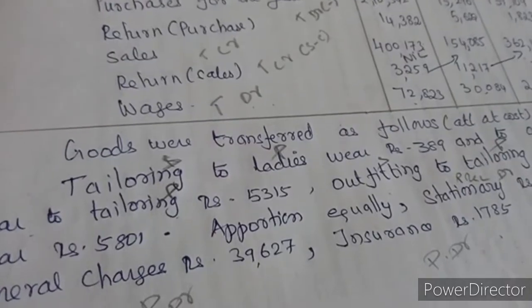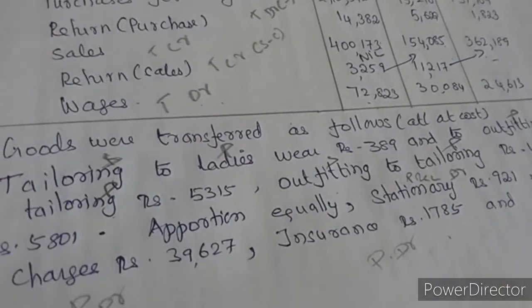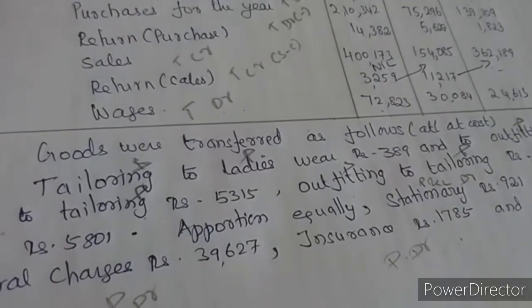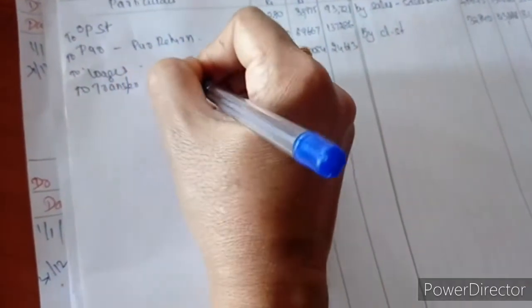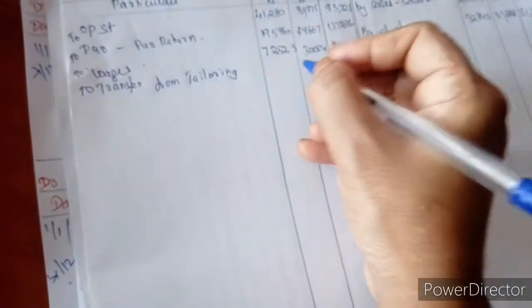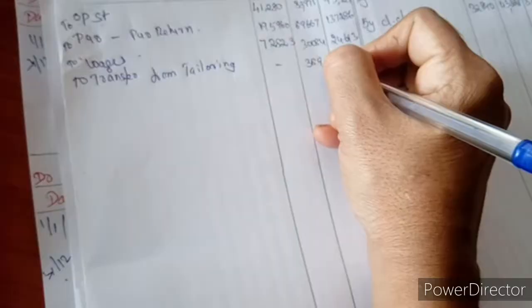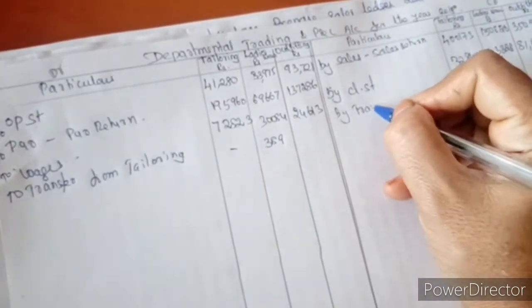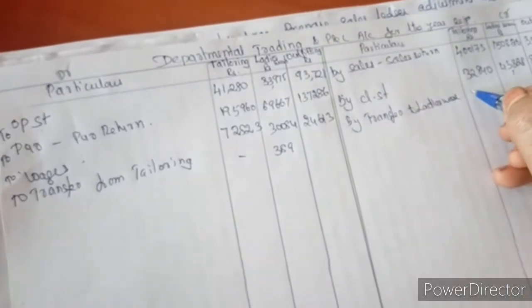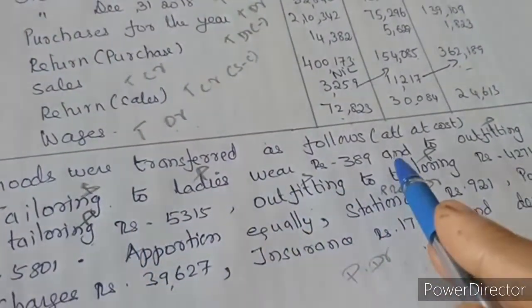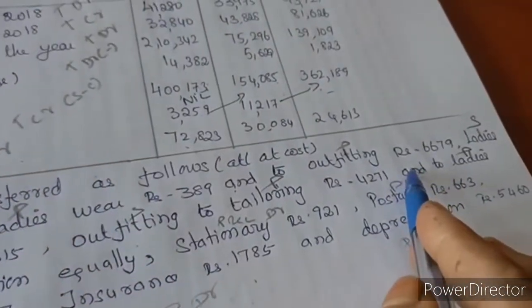Transfer entries: Tailoring to Ladies Wear — 38,900. This appears as sales in Tailoring column and purchase in Ladies Wear column. Transfer from Tailoring to Outfit — 6,679. This appears as sales in Tailoring and purchase in Outfit column.